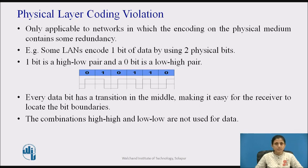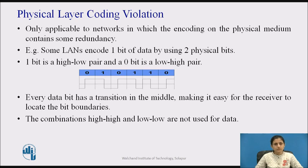The last method of framing is only applicable to networks where the encoding on the physical medium contains some redundancy. For example, some LANs encode 1 bit of data using 2 physical bits — a 1 bit is a high-low pair and a 0 bit is a low-high pair. Every data bit has a transition in the middle, making it easy for the receiver to locate bit boundaries. The combinations high-high and low-low are not used for data. Many data link layer protocols use a combination of character count with one of the other methods for extra safety.